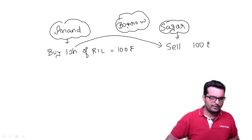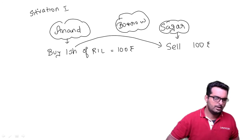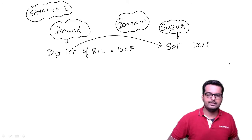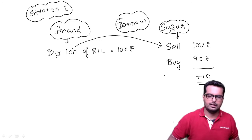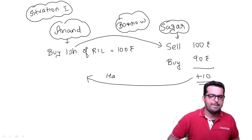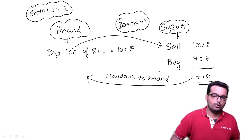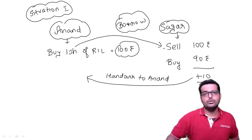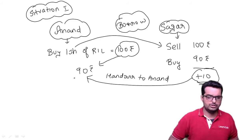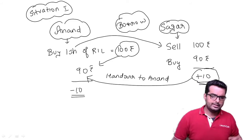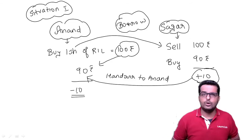At the end of one year there can be two situations. In situation number one, he sold at 100 rupees. At the end of one year, the price falls down to 90 rupees. At this time, Sagar will buy back the share, making a profit of 10 rupees, and hand the share back to Anand. From Anand's point of view, the share he bought for 100 is now priced at only 90, so he is making a loss of 10.